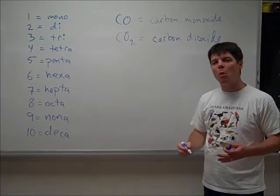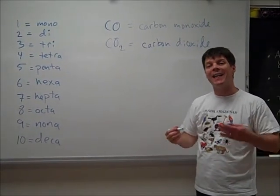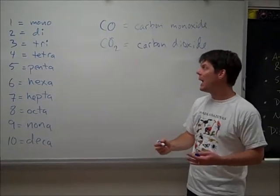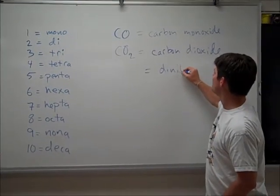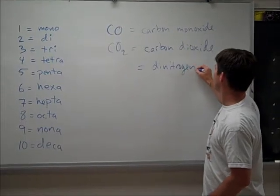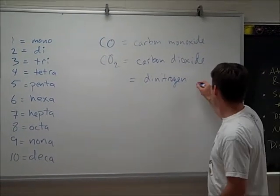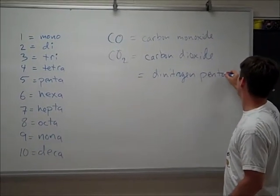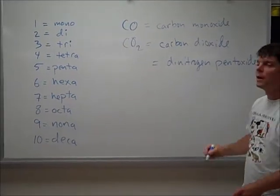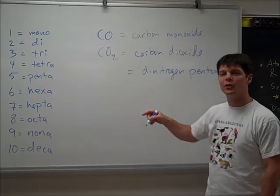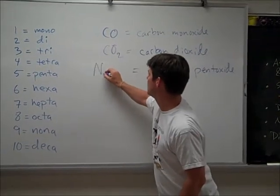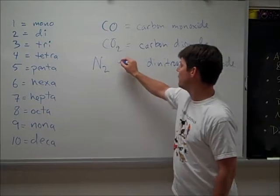If I have more than one of the first element, then I need to use the prefix. If I have something like dinitrogen pentoxide, this is indicating to me that I have two nitrogens N2 and five oxygens O5.